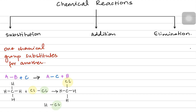The displaced hydrogen atom bonds with the remaining chlorine atom. So basically, one of the chlorines is substituting for the hydrogen — that is a substitution reaction.